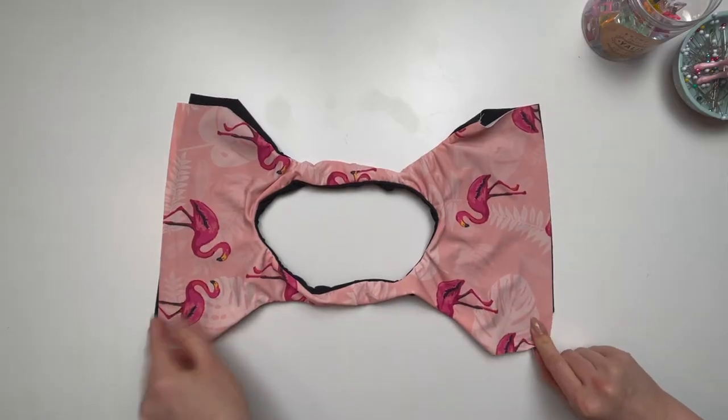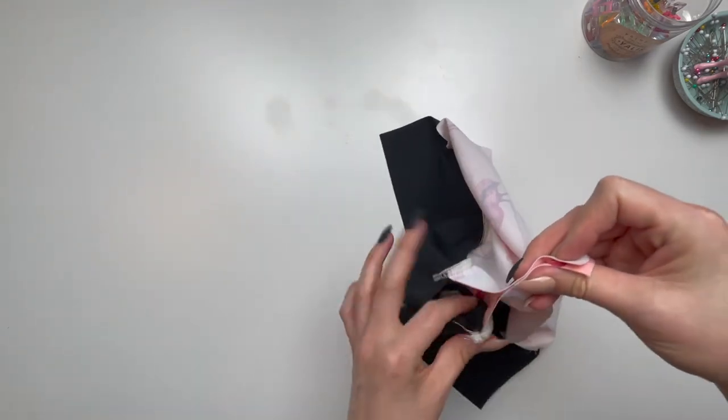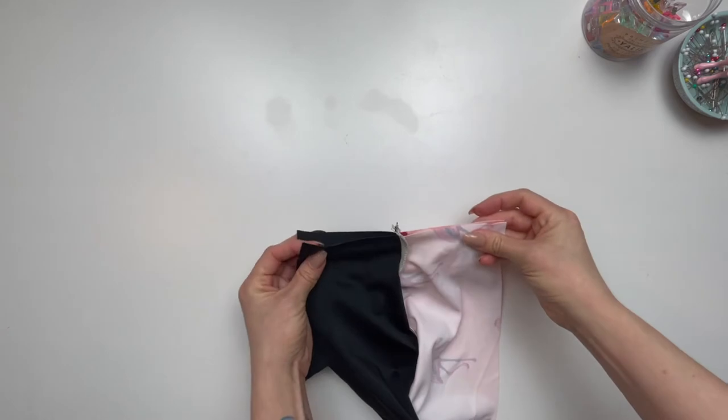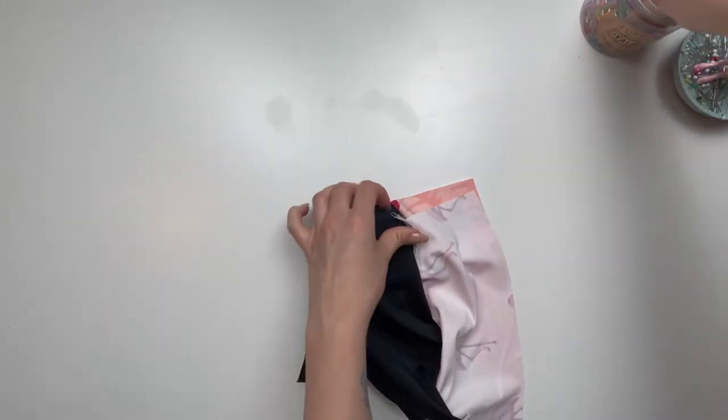Now we will complete the side seams. Match like fabric, so the main fabric to the main fabric and the lining to the lining. In this case, I have flamingos and black fabric.